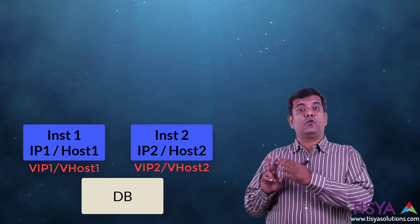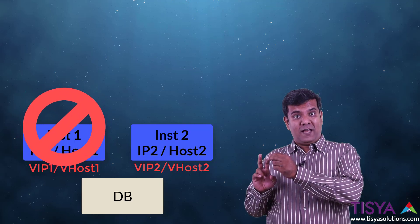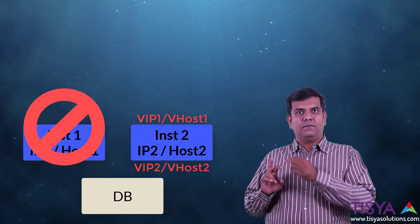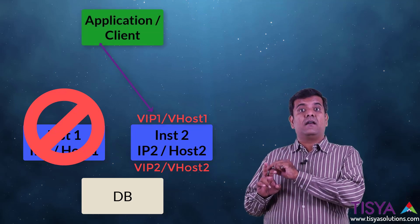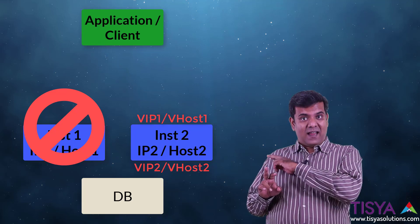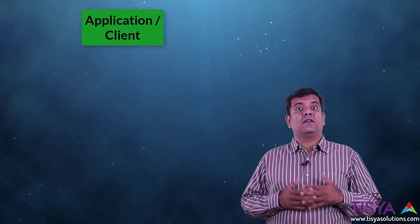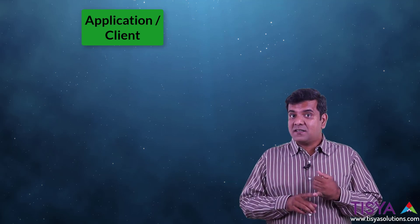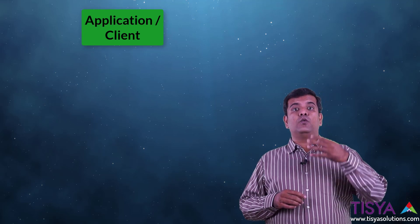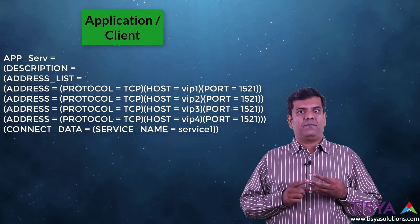When one of the instances goes down, the virtual IP will fail over to the other node. Thereby, when a request comes to connect to the VIP, it can communicate back saying that node is down, and the client can then connect to another node. Going back to the client connectivity settings on the application, you would now list down all the host names — specifically the VIP names — that are part of the cluster.